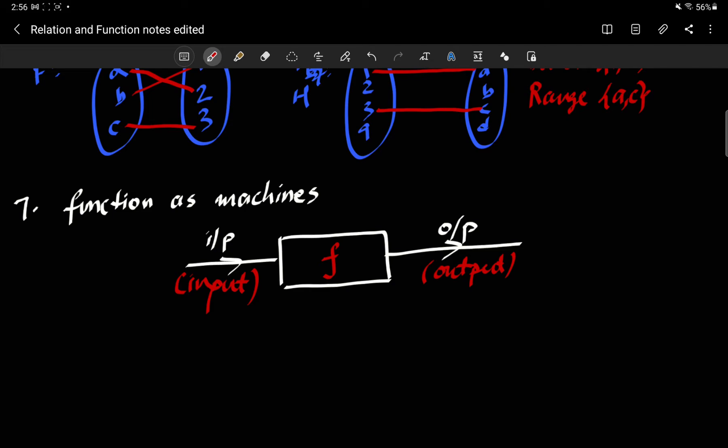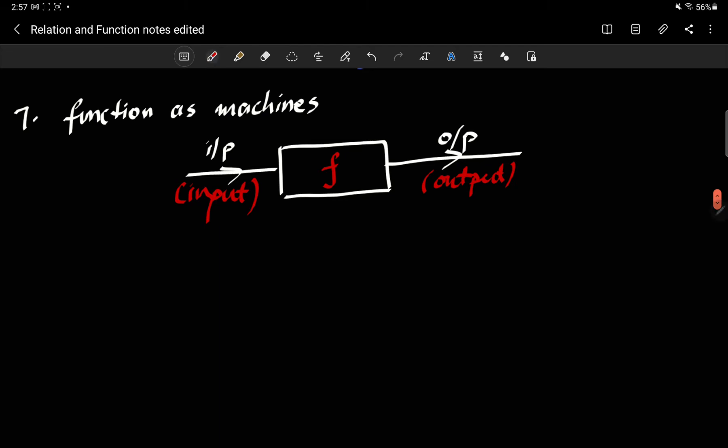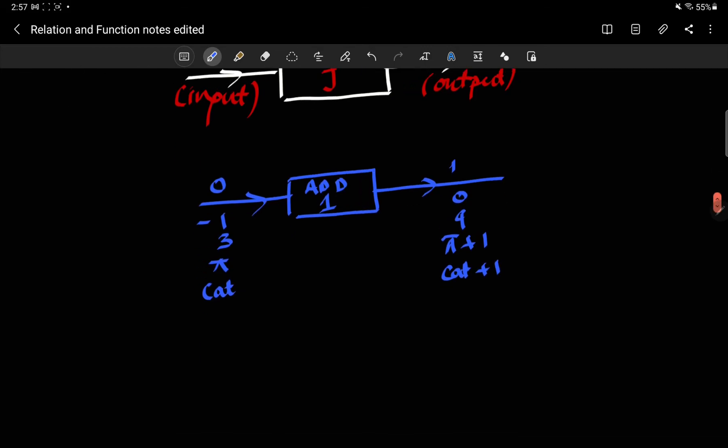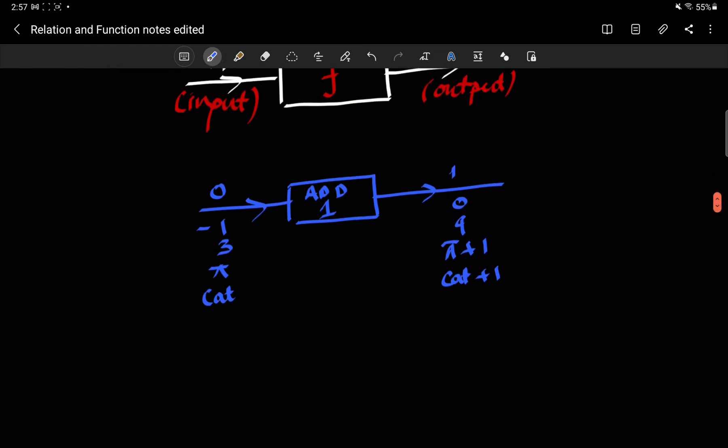Now there may be multiple ways in which you encode this instruction. For example, let's say I make a very simple function which is basically just an instruction or a machine that does something for you, and it says add one. So if I throw in a zero to it, it's going to give me a one. If I throw negative one, it's going to give me zero. If I throw in three, it's going to give me four. If I throw in pi, it's going to give me pi plus one. If I throw in cat, it's going to give me cat plus one. So it doesn't really care.